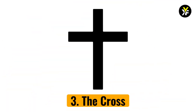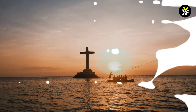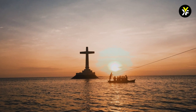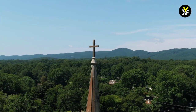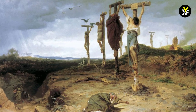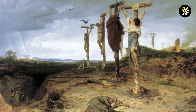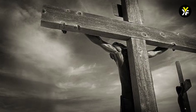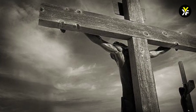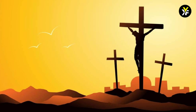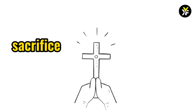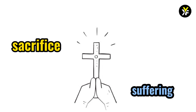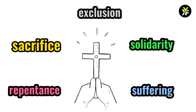Number 3: The Cross. The cross is the most well-known and widely used Christian symbol. It can be found anywhere there is a Christian presence. The cross was used for torture and public humiliation in Roman times, and criminals were executed on crosses. For Christians, the cross represents not only Jesus' death, but also his resurrection. The cross represents sacrifice, suffering, repentance, solidarity, and exclusion.